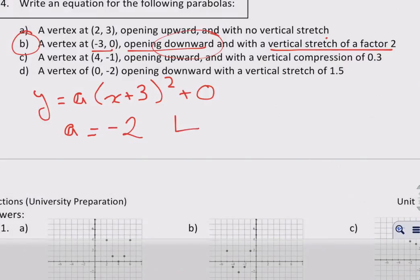Final equation is going to look like this: y equals negative 2 x plus 3 squared. I'm not going to bother writing in the 0 because, once again, I don't need it.